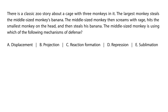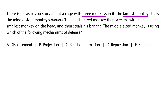Classic zoo story: A cage has three monkeys. The largest monkey steals the middle-sized monkey's banana. The middle-sized monkey then screams with rage, hits the smallest monkey on the head, and steals his banana. This is a classic example of displacement — the middle-sized monkey is very angry that his banana was stolen but cannot respond with anger to the larger monkey, so he takes it out on the smaller monkey.